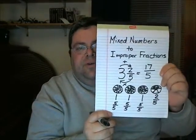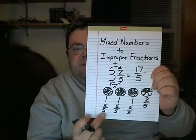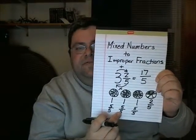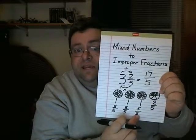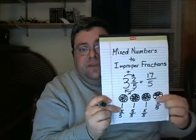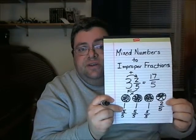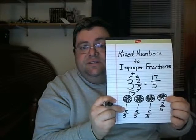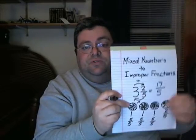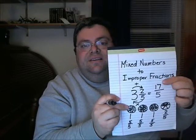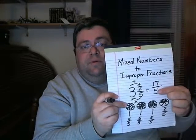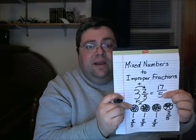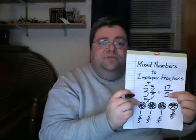This is an improper fraction, where the numerator is larger than the denominator. At the end of our problems, we would return it to a mixed number, but for now, that's what we have. Just to point out, let's check this: 5 fifths, 10 fifths, 15 fifths, 15 plus 2 is 17 fifths. In other words, if you count all these discs, there should be 17 of them, coming from discs that were all cut into five pieces. Try a few of these on your own and see how it goes.